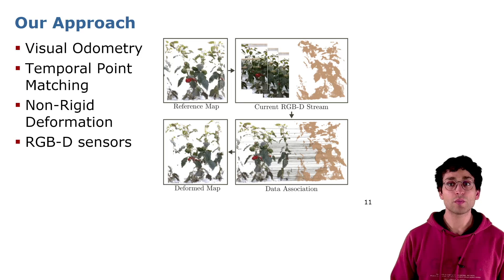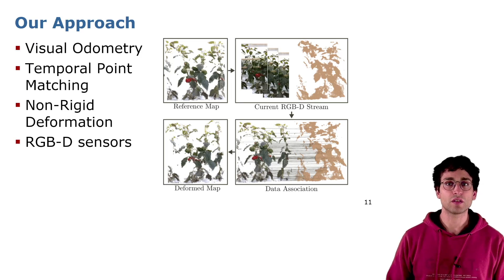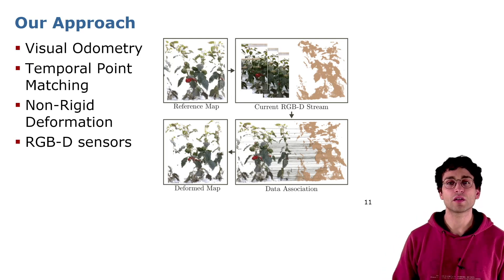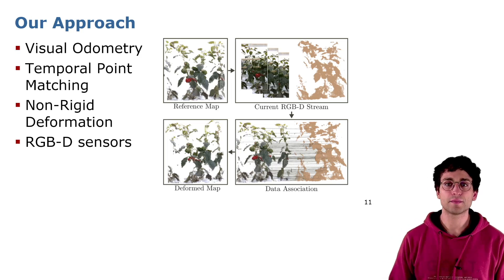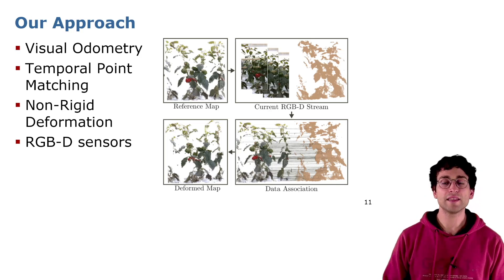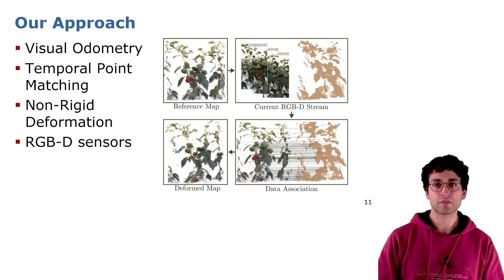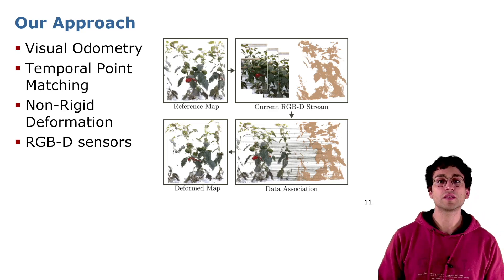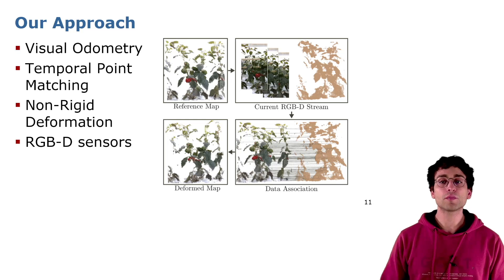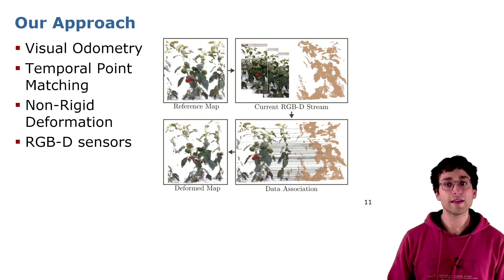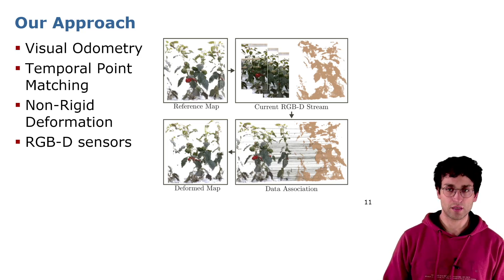In this work, we propose a system that relies on visual odometry, temporal point matching, and non-rigid deformation to solve the problem of producing spatial temporal representations of plants in the wild. We work with consumer RGBD sensors on entire glasshouse rows, handling multiple plants at once. Our approach does not require any modification of the natural environment. We will show how our approach can also work with noisy and challenging scenarios, relying only on consumer RGBD cameras.